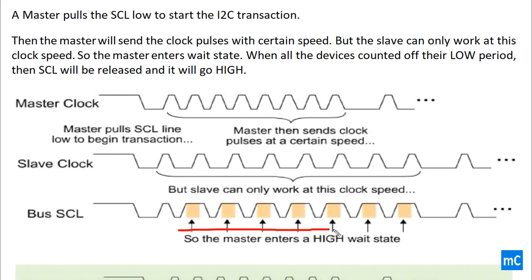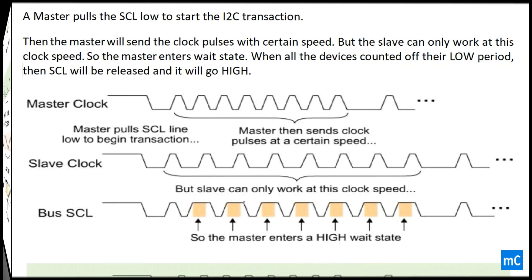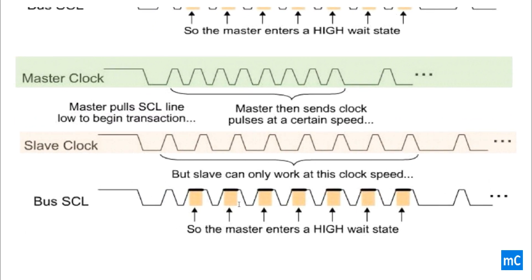This is the actual bus serial clock. So, the master enters a high wait state here. The highlighted places as explained earlier. This is how the I2C synchronizes its clock.